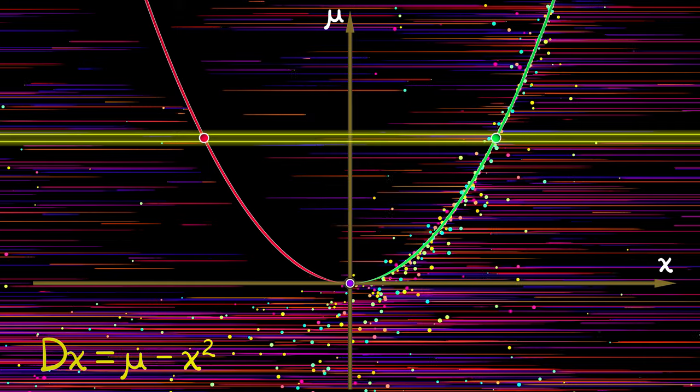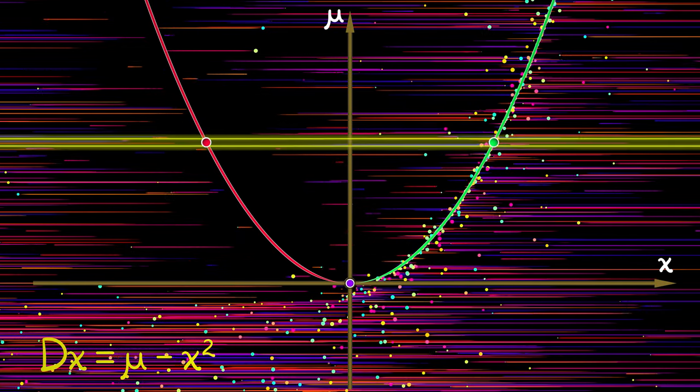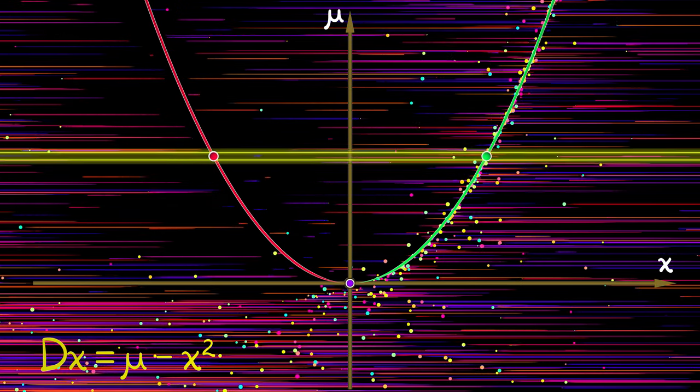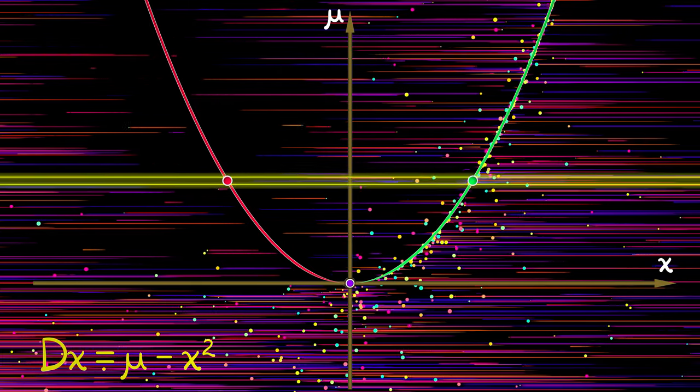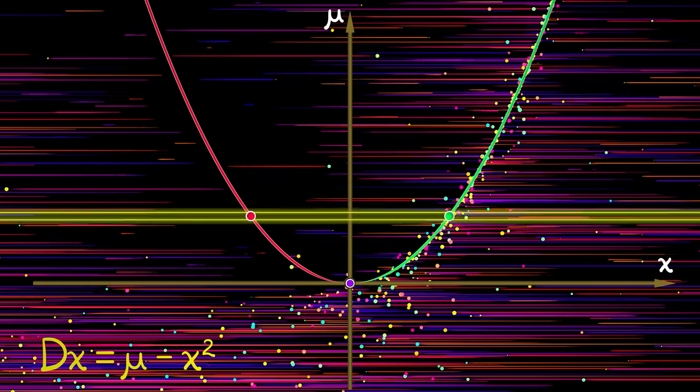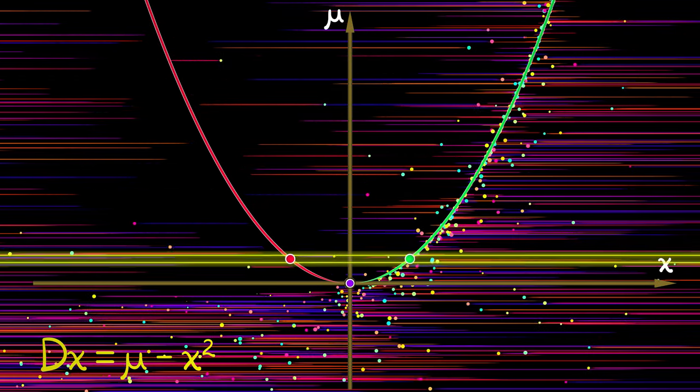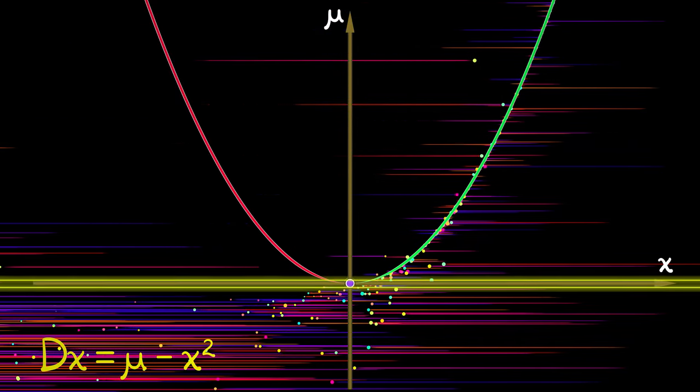And precisely at the bifurcation point where mu equals 0 and x equals 0, what is happening is this pair of stable and unstable equilibria collide. They crash into each other and annihilate. They're gone.